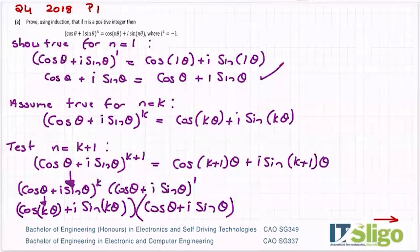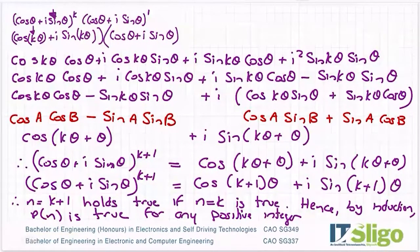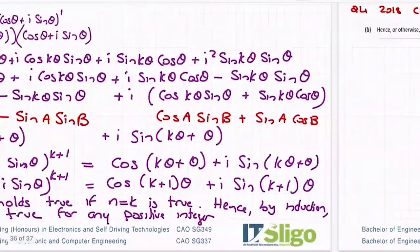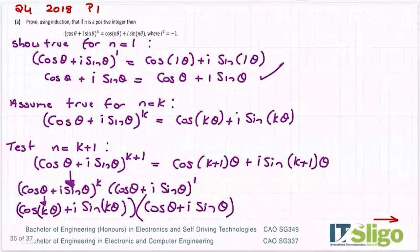Hence, by induction, because that's our method of proof, P of N is true for any positive integer. And I got that from here. If N is a positive integer, show it's true. So that is proof by induction of De Moivre's theorem. And if you do that a couple of times, you get used to it.